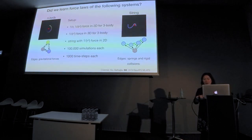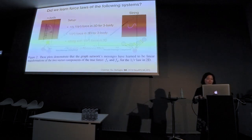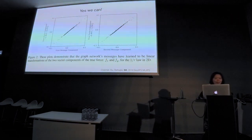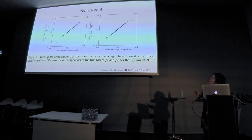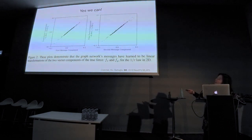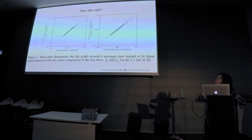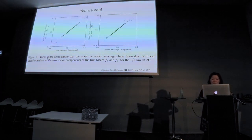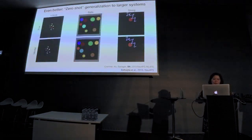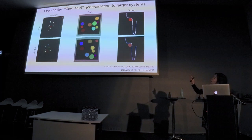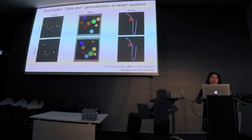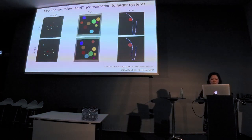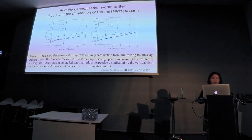Can we learn the force laws of all these different simulated systems? Yes, we can. These plots show the graph network's messages have learned to be linear transformations of the true force: it's actually a very flat line for the two factor components of the true force for the 1/R law in 2D. You can see corresponding plots for 3D and all other systems. Even better, this generalizes to larger systems, and when you minimize the message passing dimension to exactly match the system dimensionality, you generalize even better.